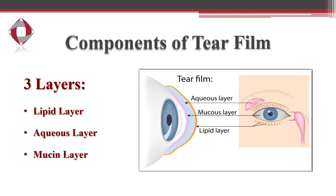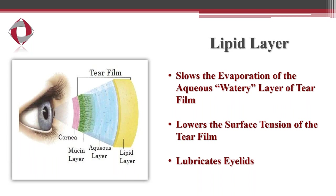The components of the tear film: the tear film is made of three layers — the lipid layer, which is the outer layer; the middle aqueous layer; and the inner mucin layer.